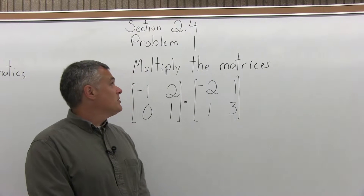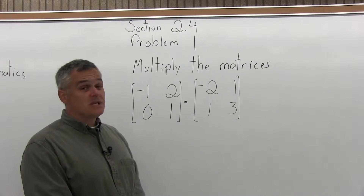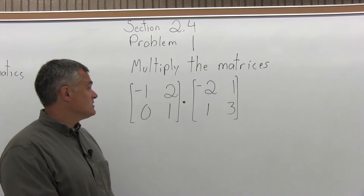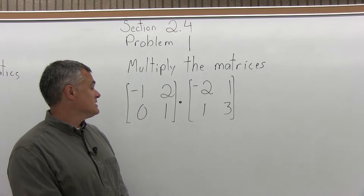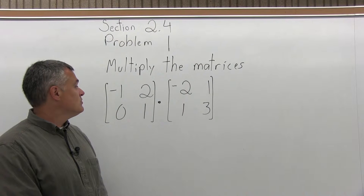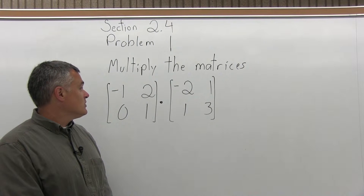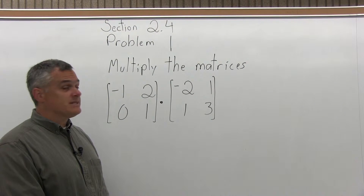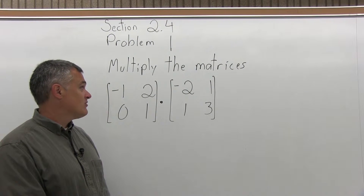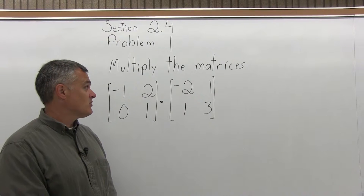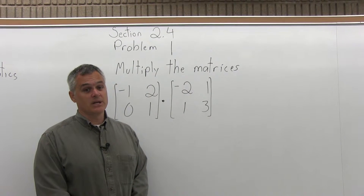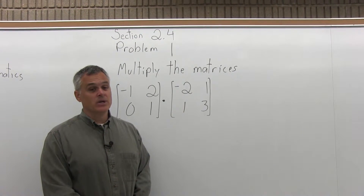This is problem number 1 from Section 2.4. It says multiply the matrices, and you have two matrices. The first one has negative 1, 2 on the top row and 0, 1 in the bottom. And the second matrix has negative 2, positive 1 in the top row and 1, 3 in the second row.